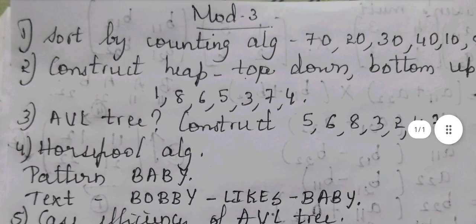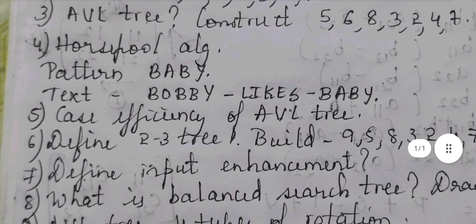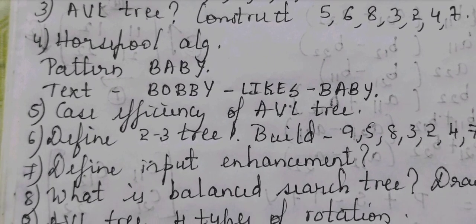And one more thing that you should remember is when they give the question like construct heap, after you construct it please write in the heading whether you have constructed maximum heap or minimum heap. In the exam always write maximum heap. That is important. And for Horspool algorithm there are four cases. After shifting you just write what is case one, case two, case three, and case four.